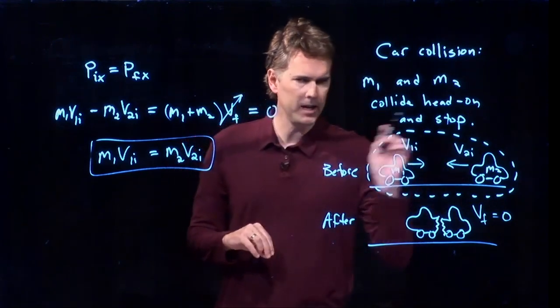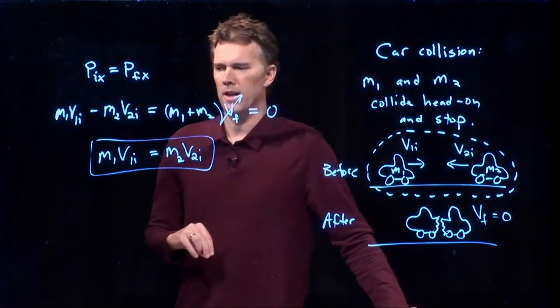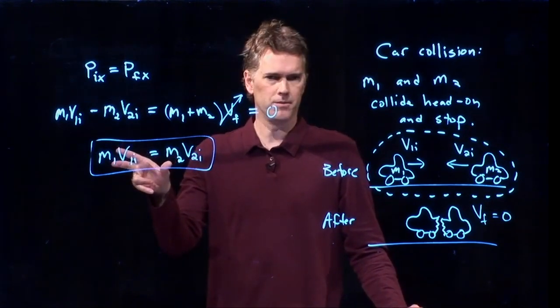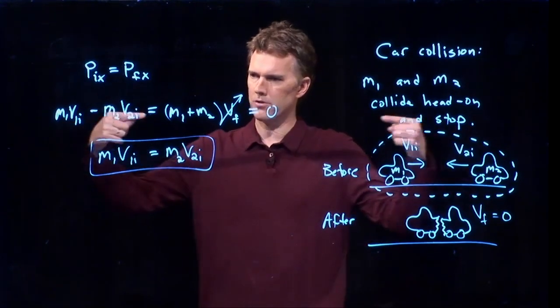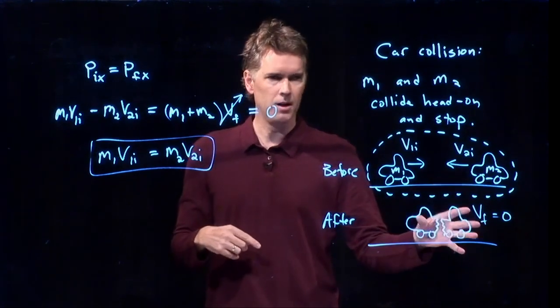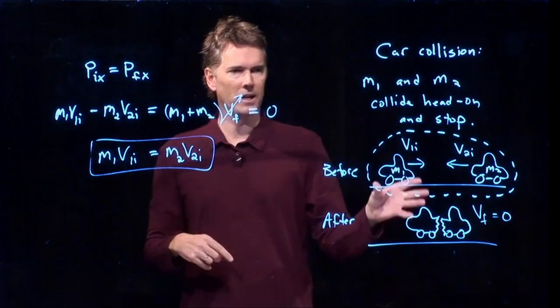And now with this relationship, you can see what happens. Obviously if m1 is equal to m2, then the only way we're going to satisfy this is if the speeds are equal. And that should make sense to you, right? If two cars collide and they're the same mass, if they're going to come to a stop, they have to be moving at the same speed.